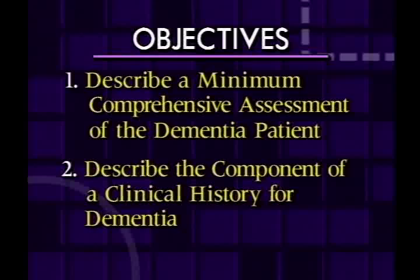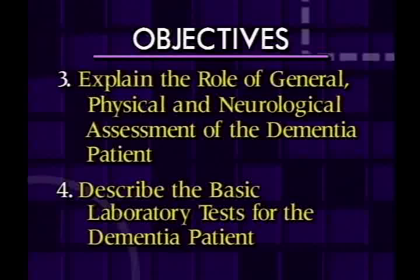Let's begin by reviewing the objectives of this program. Number one, we want to describe a minimum comprehensive assessment for the typical dementia patient in an outpatient setting. Number two, we want to describe the components of a clinical history for dementia — that's very important because the clinical history provides valuable clues. Number three, we want to explain the role of the general physical and neurological assessment in the dementia patient.